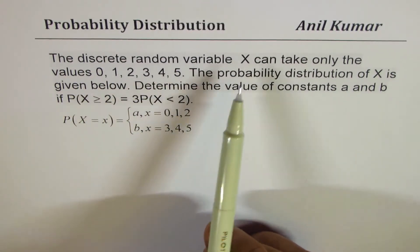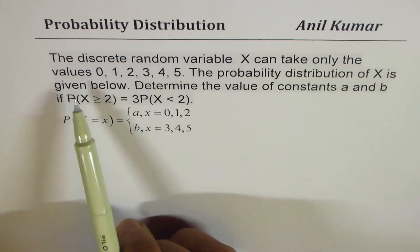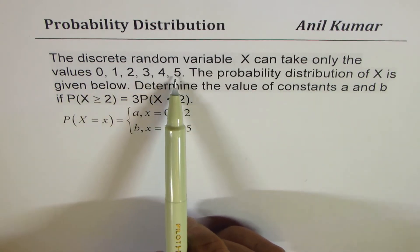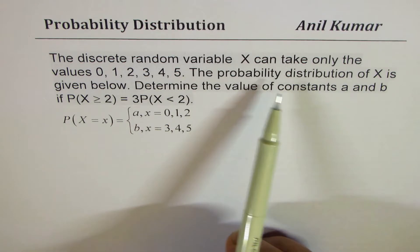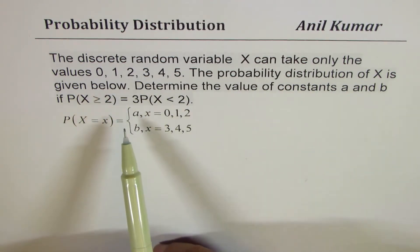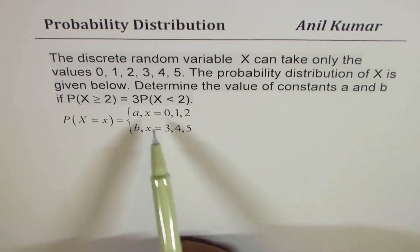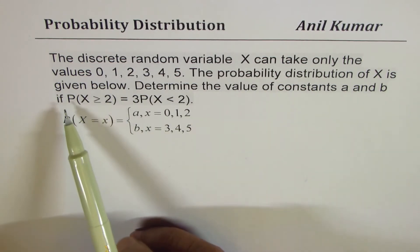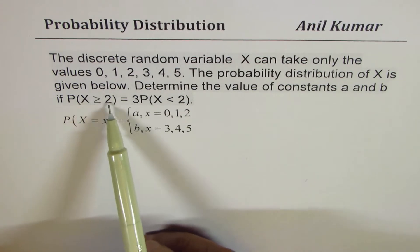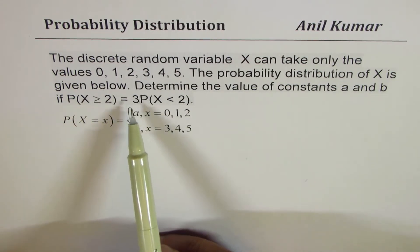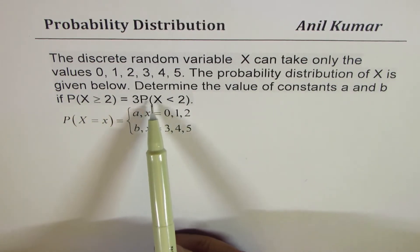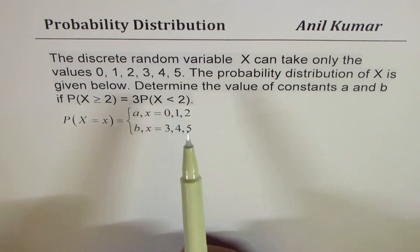The question here is: the discrete random variable X can take only the values 0, 1, 2, 3, 4, and 5. The probability distribution of X is given below. Determine the value of constants a and b if P(X ≥ 2) = 3P(X < 2).